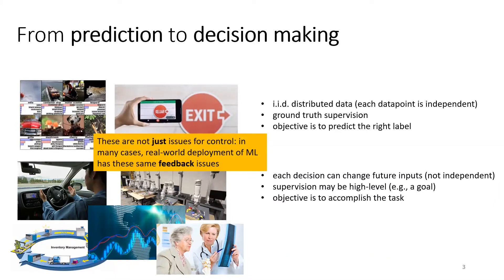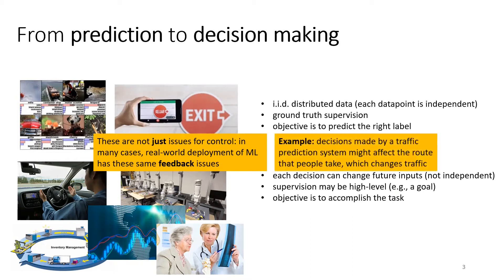These decision-making problems are characterized by different properties: each decision can change future inputs, so the inputs are not independent. Supervision may be very high level — just a goal like 'cure the patient' or 'make the largest profit.' Even systems we think of as supervised, like a traffic prediction app, actually have decision-making properties — the predictions affect what people do, which in turn changes whether predictions are right or wrong. So when ML systems make decisions, it's really a decision-making problem in disguise.